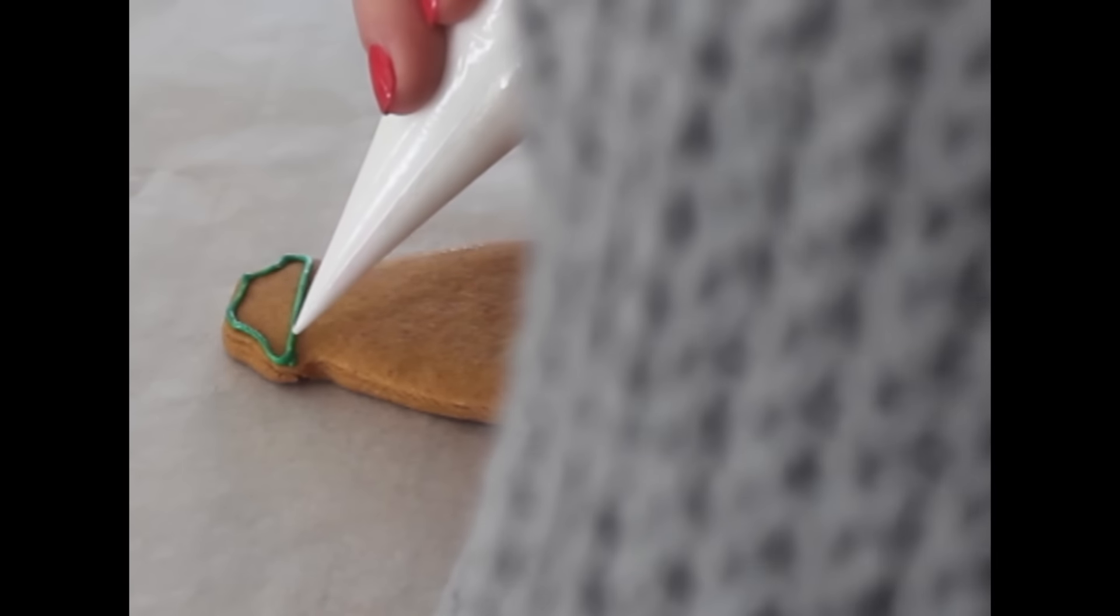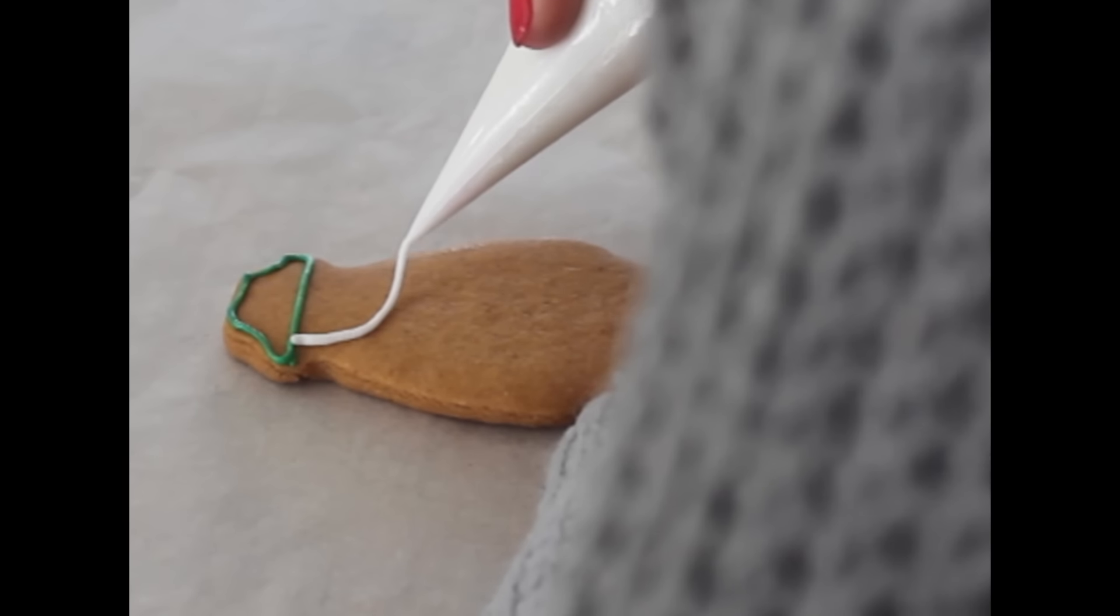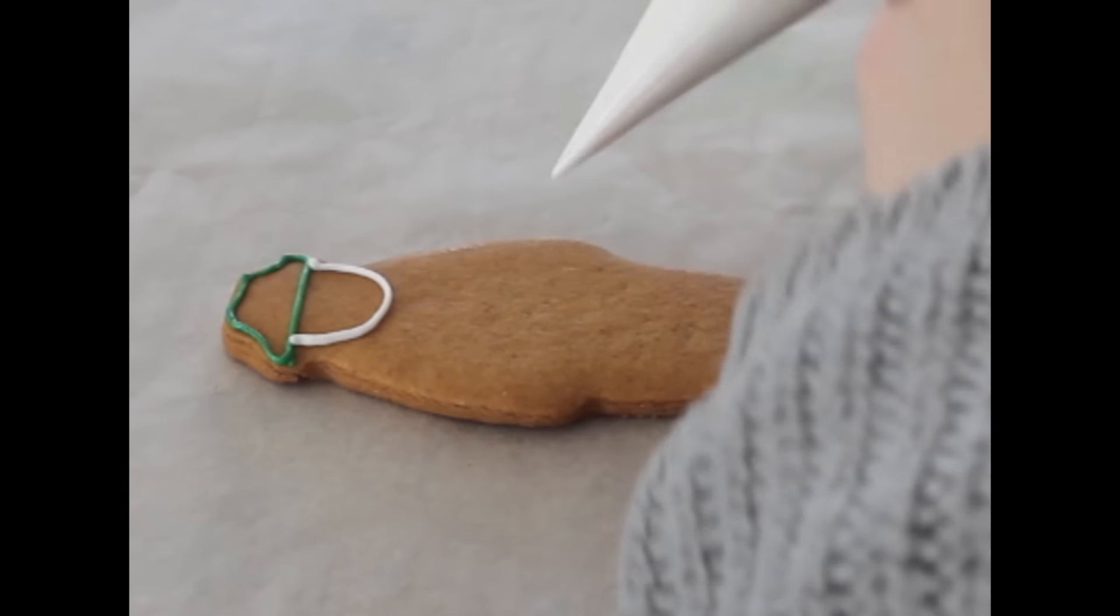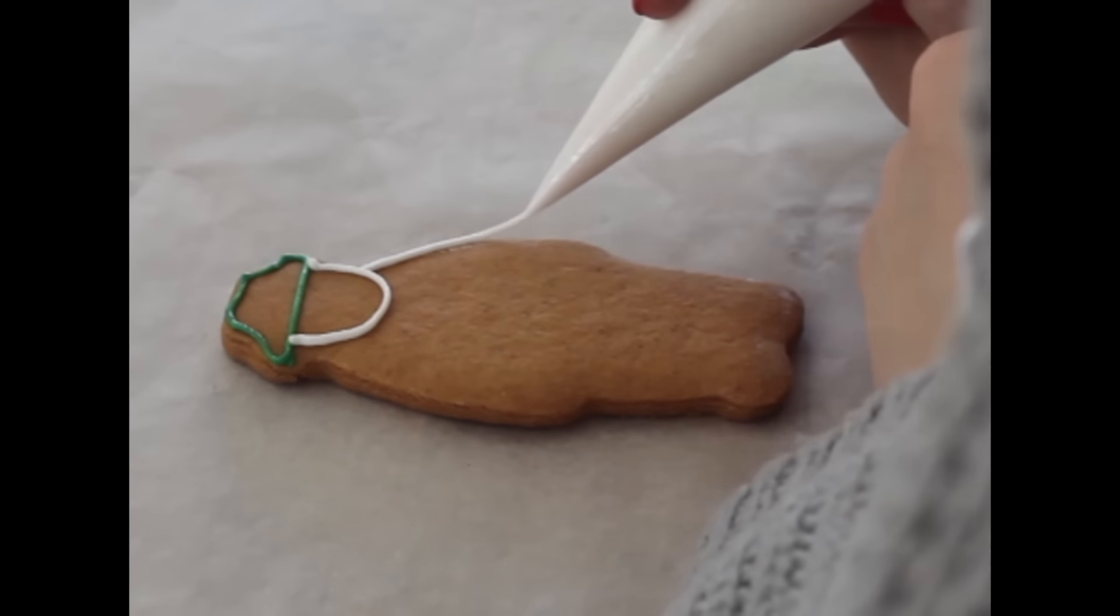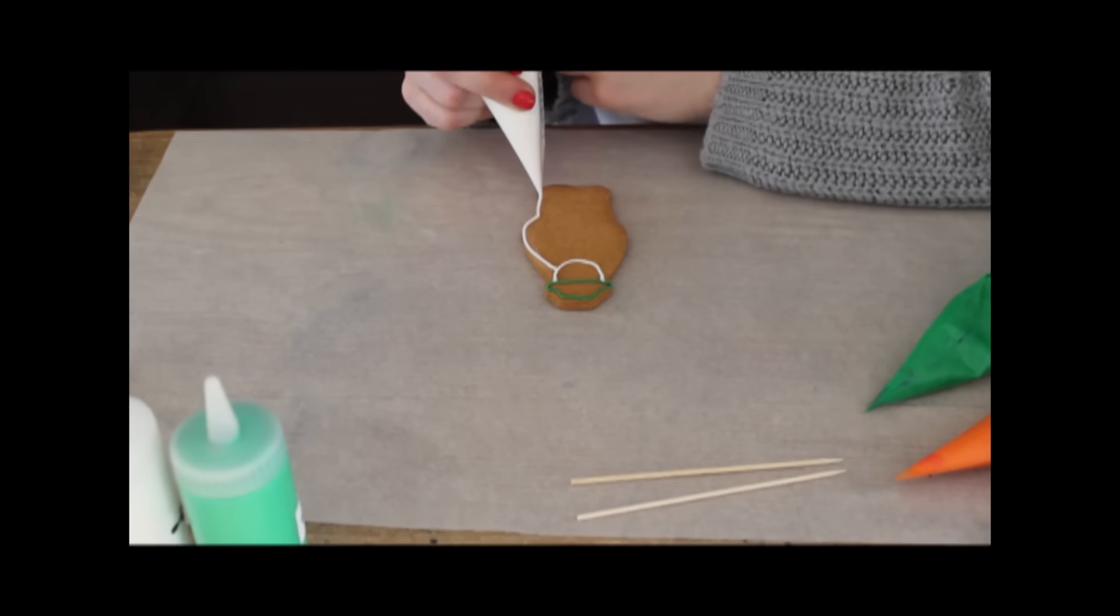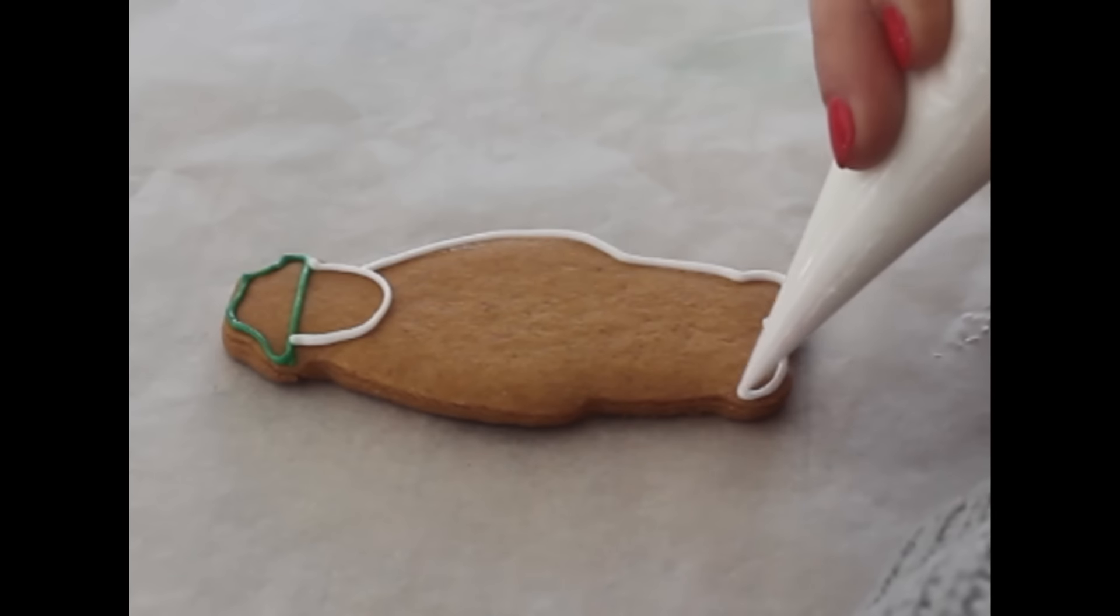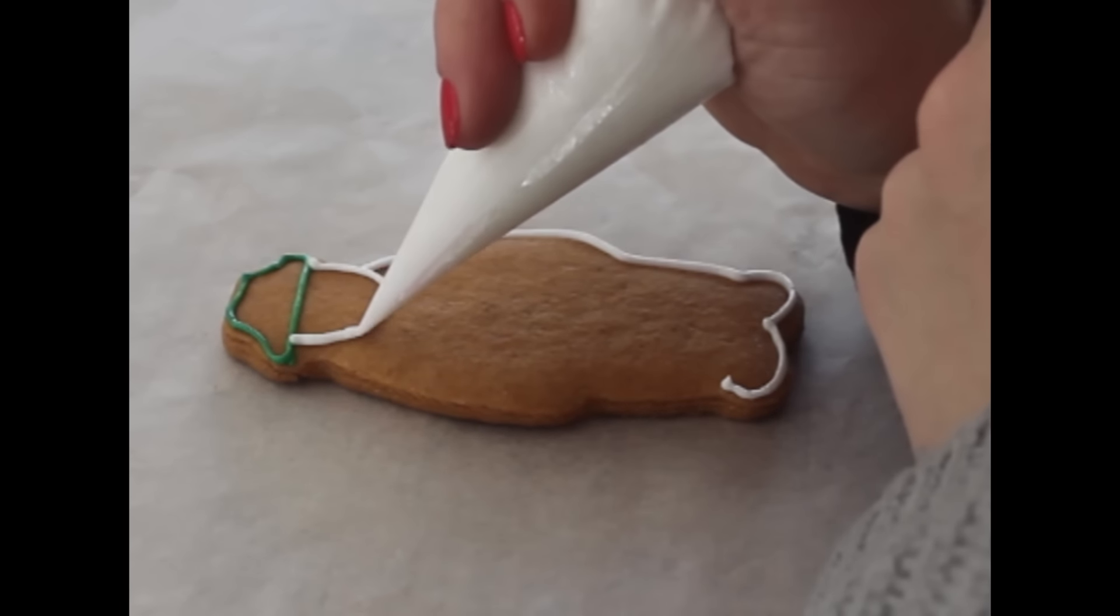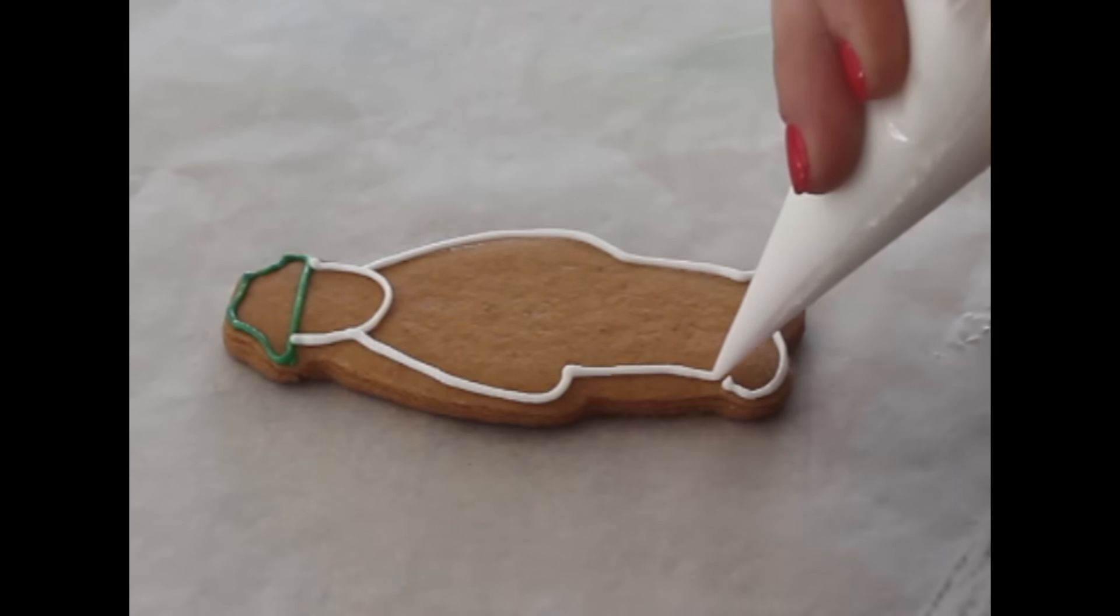Then we go on to just do the outline of the Snowman's body. We're going to give him his sort of face here like that and then just go ahead and outline the rest of his body just by following the shape of your biscuit like that.